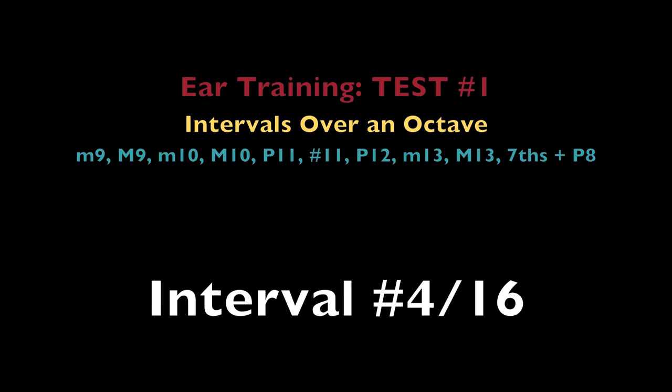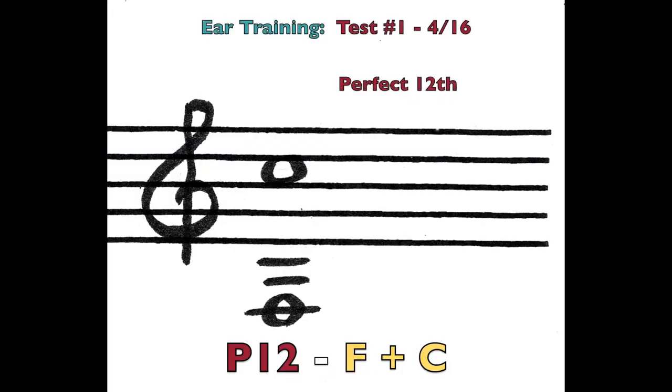Minor tenth. The notes G and B flat. Or G sharp and A sharp. Perfect twelfth. The notes F and C.